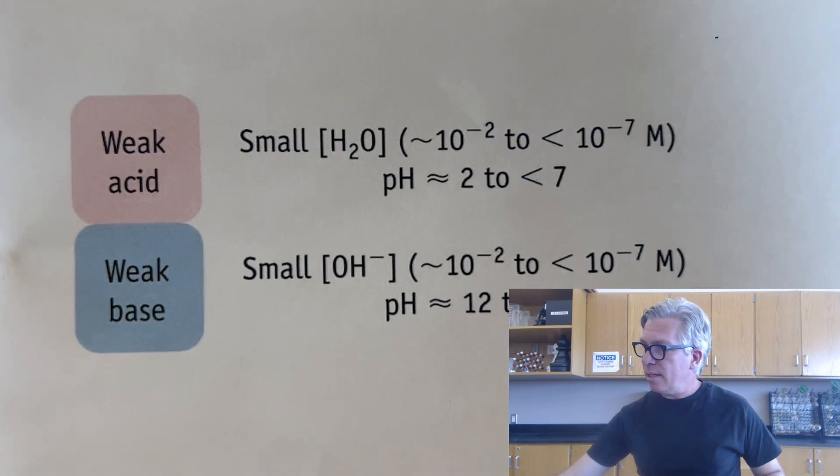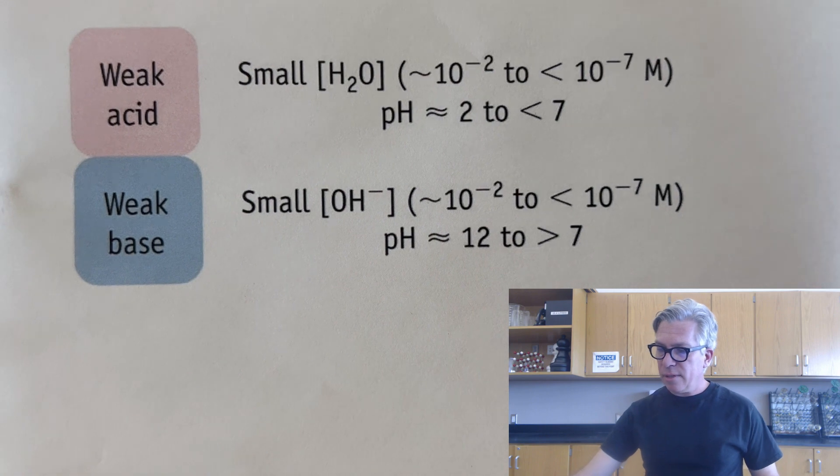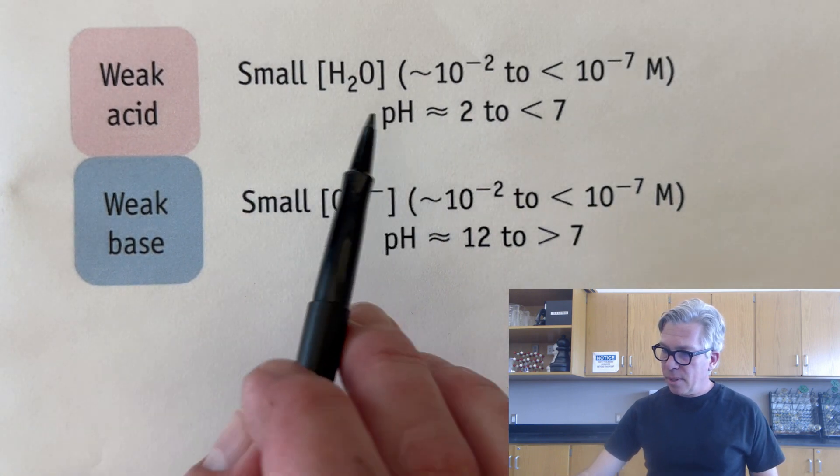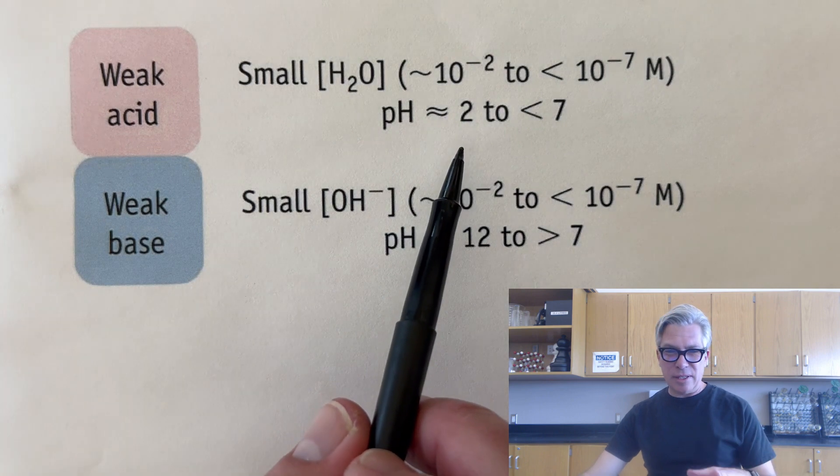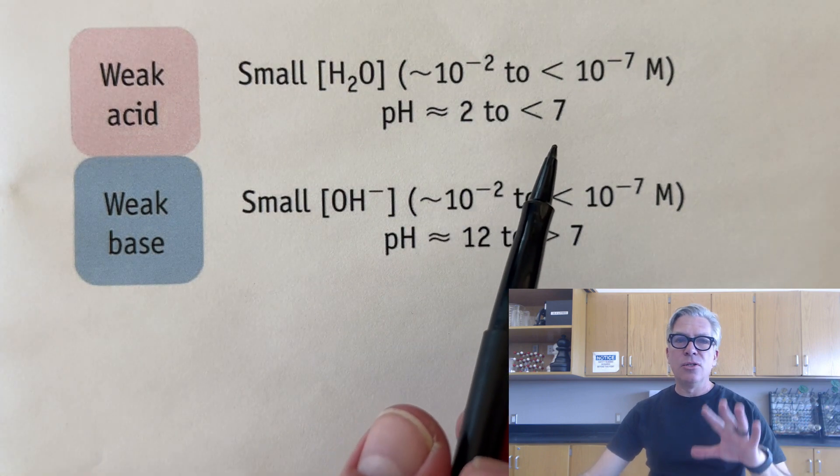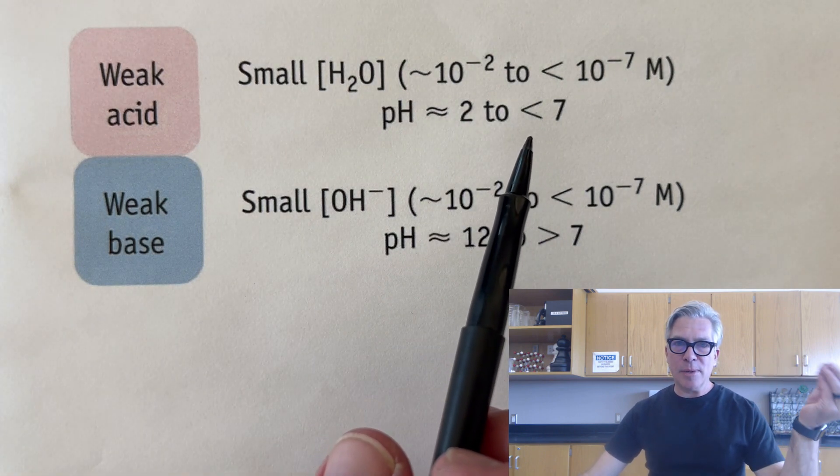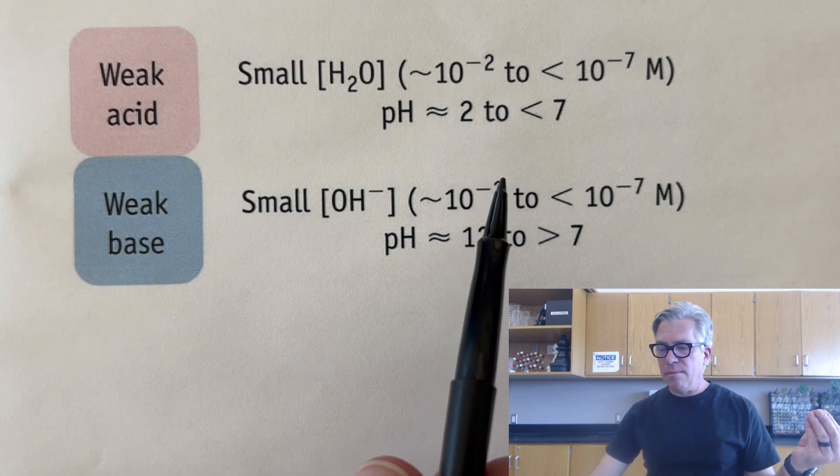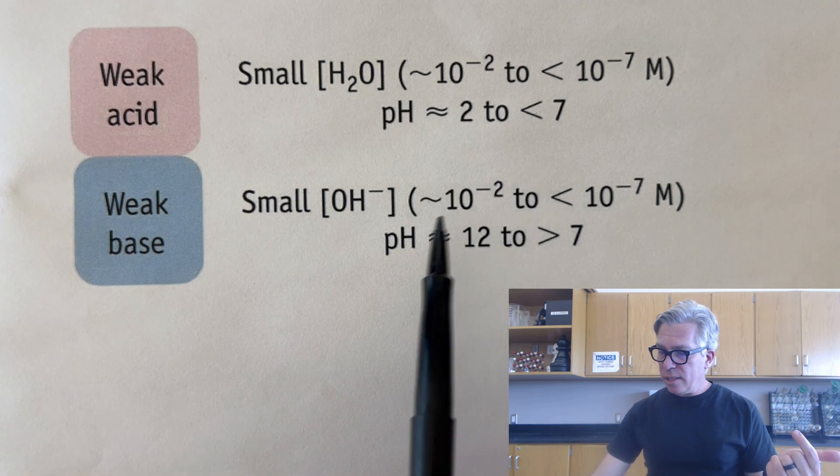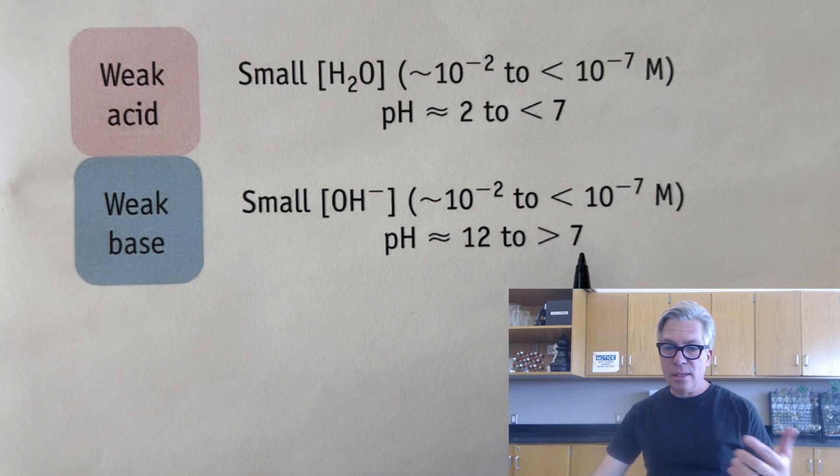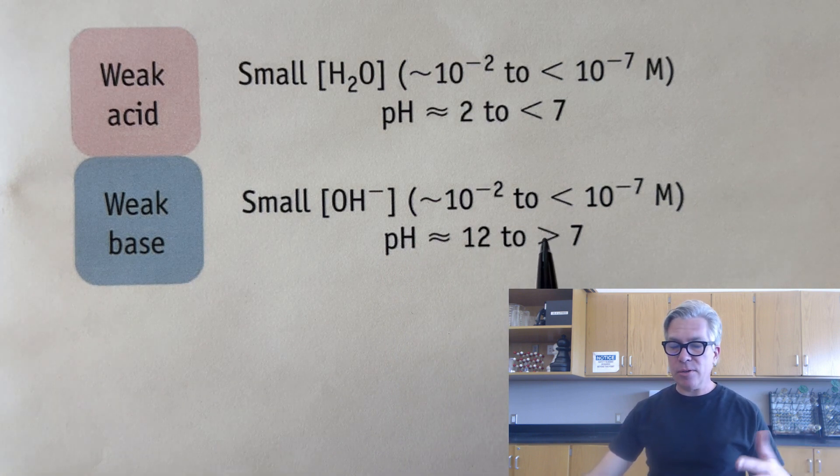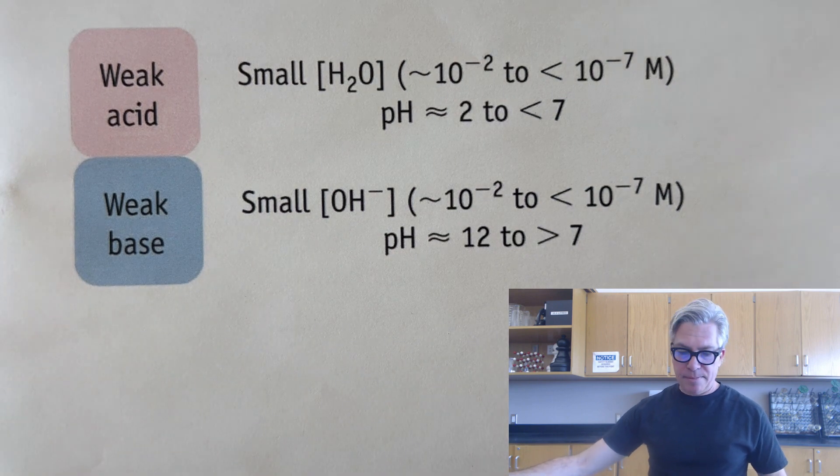Just quick reminder that yes, weak acids have small Ka values and their pHs are generally going to be between two and seven. So if you get something outside of that, just kind of do a does this make sense test and maybe go back and check your work. And if you do get something for a weak base somewhere outside of 12 to seven, then maybe there's an error. You might want to go check it. That's kind of a general rule, not the always rule.